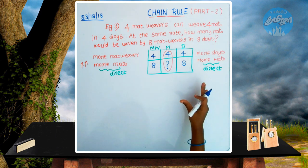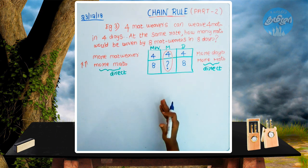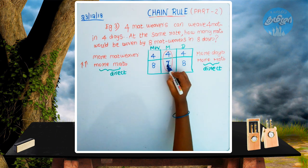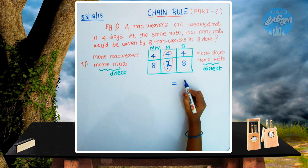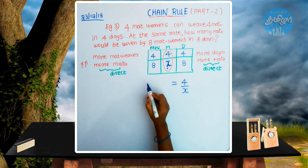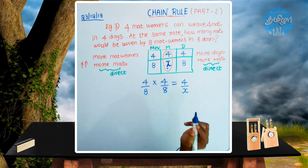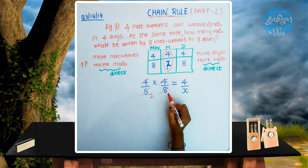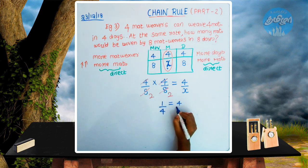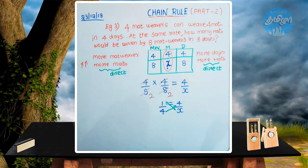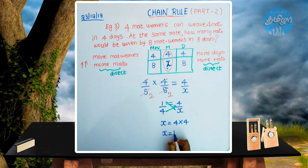If you have a direct proportion, we cannot answer that directly. But if we have a person to add a different condition, we will get a different answer. How do we report this? 4 × 8 × 4 ÷ 8. If we complete this, then we cancel. This is a 2 table. How do we multiply? 1 by 4 equals 4 by x. Now let's get this x. x is equal to 4 into 4, so x is equal to 16.